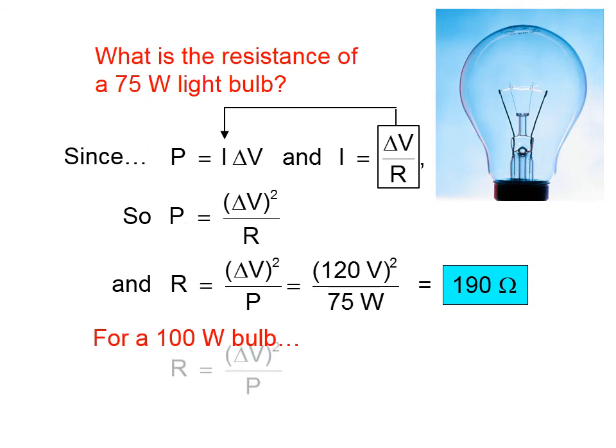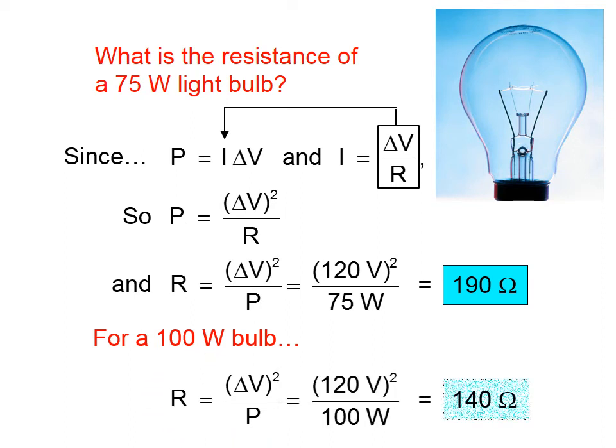For a 100 watt light bulb, we could go through this same exercise. We will end up with the same relation that we did above, and we'll find, with the denominator changed, that a 100 watt light bulb has less resistance.